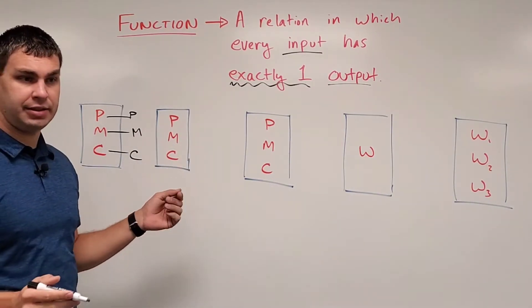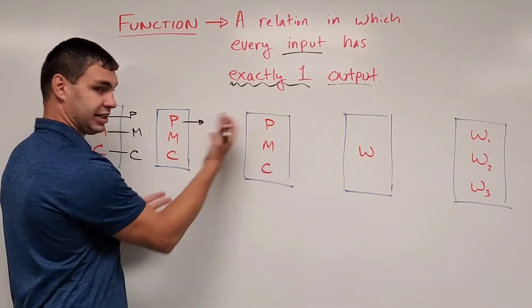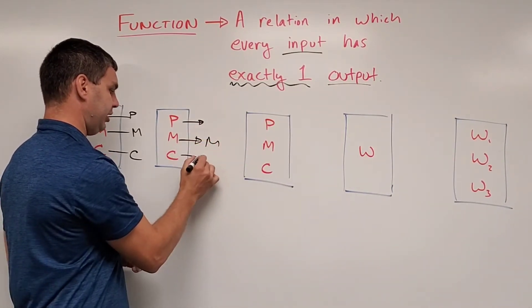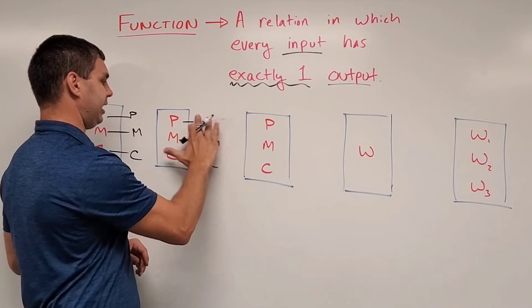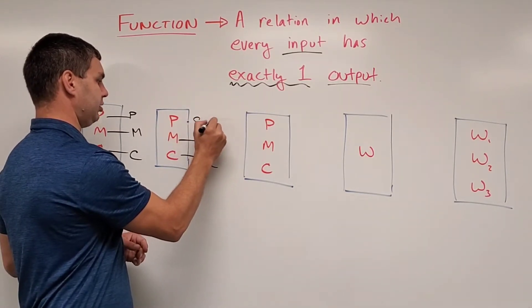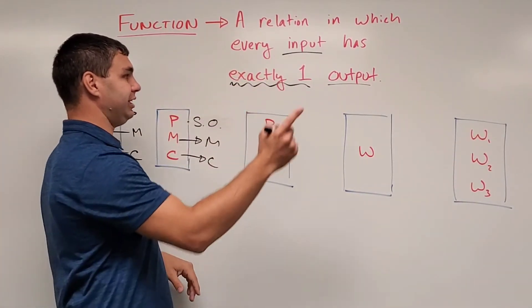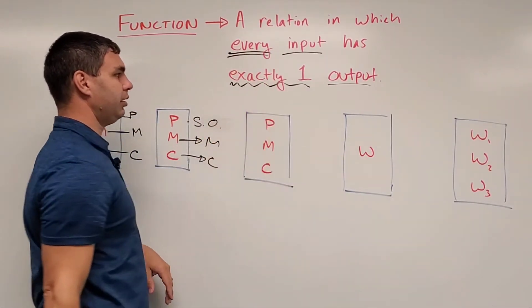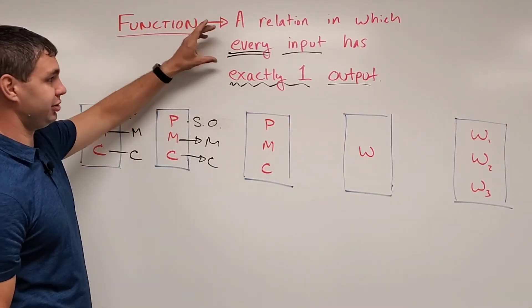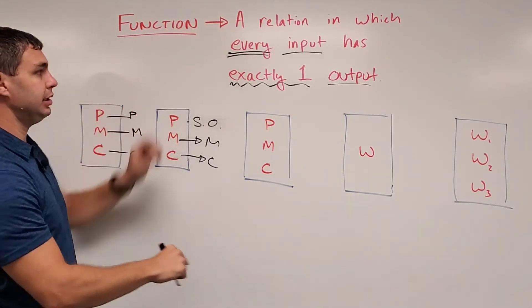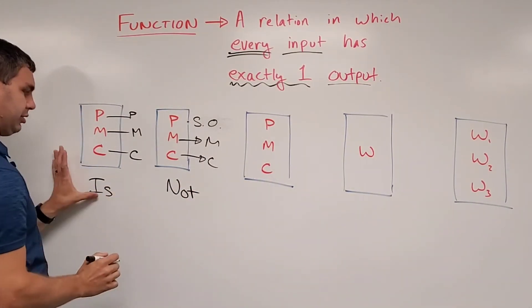This next one: let's say everyone likes Pepsi and it gets sold out. Mountain Dew still has some, Wild Cherry still has some, but Pepsi isn't going anywhere — you could say it goes to the empty set, or just erase the arrow entirely. Is this a function? Well, looking at our definition — a relation in which every input has exactly one output — the keyword is 'every.' Pepsi is part of that 'every,' so since it doesn't have an output, this is not a function.